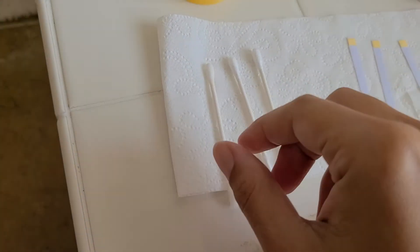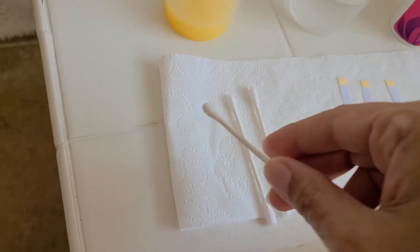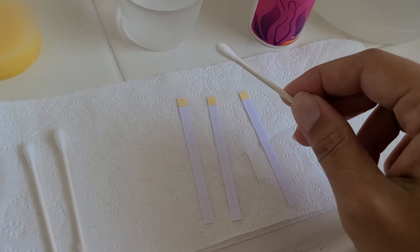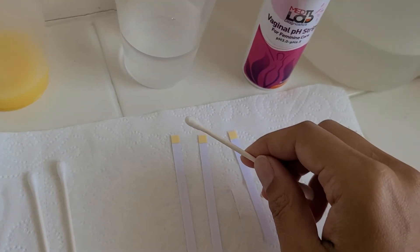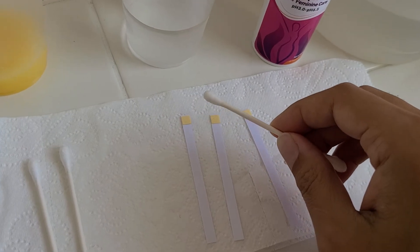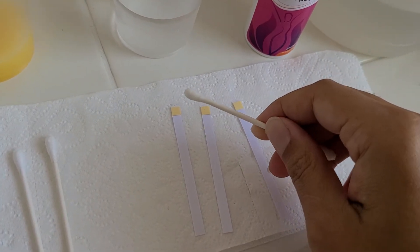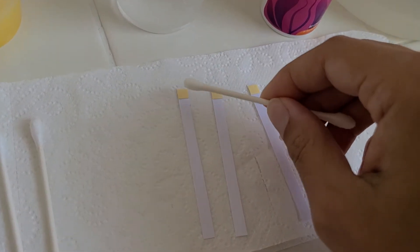So what you do is you take a cotton swab that you would buy at any pharmacy or whatnot, and then you would swab your vaginal area inside and get vaginal secretions on the swab.